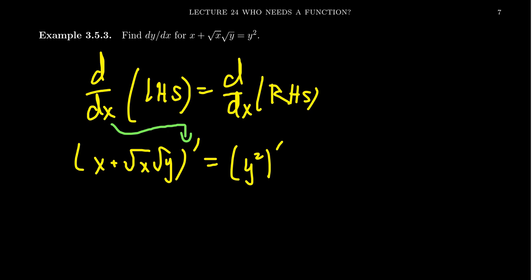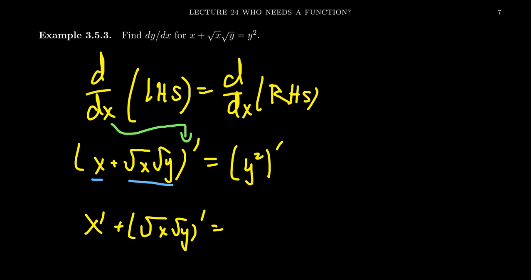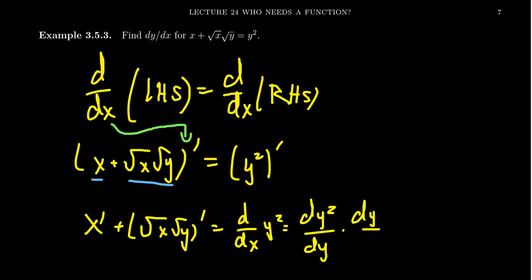On the left-hand side, because we have a sum of two terms — x and the square root of x times the square root of y — by derivative laws we can take their derivatives separately, giving x prime plus the derivative of the square root of x times the square root of y. On the right-hand side, this is where the chain rule comes out, which is really the basis behind implicit differentiation. We're taking the derivative with respect to x but we have a y, so by the chain rule we take the derivative of y squared with respect to y, which by the power rule gives 2y, and then multiply by the derivative of y with respect to x — that's the y prime we're searching for — giving 2y·y' on the right-hand side.